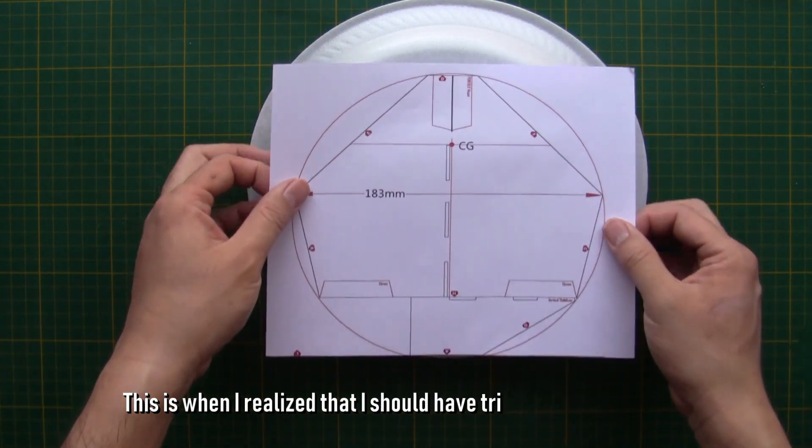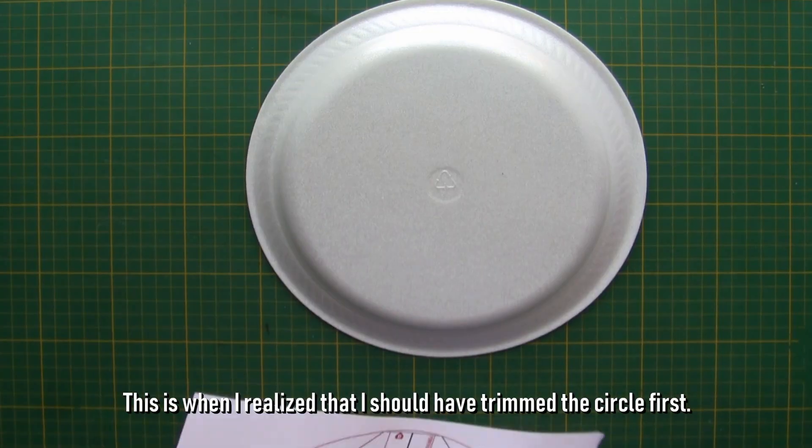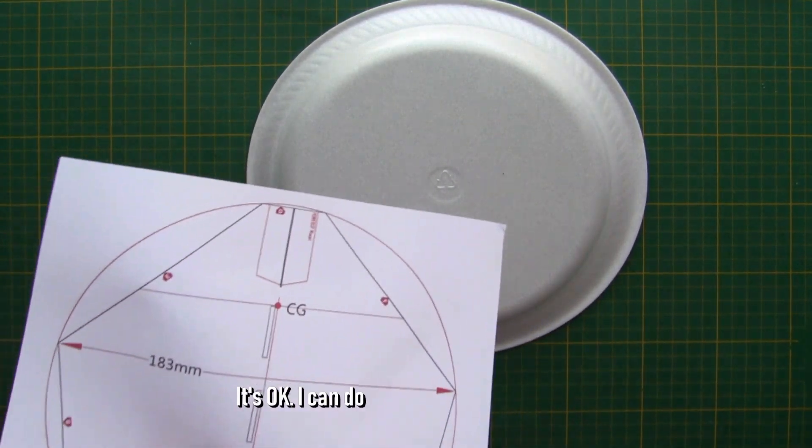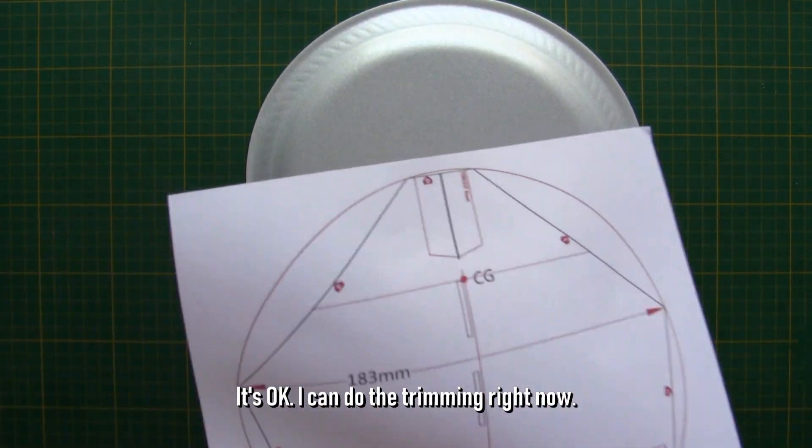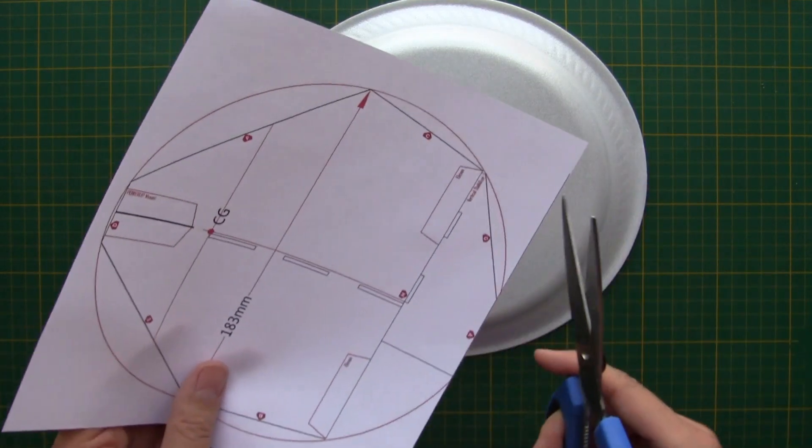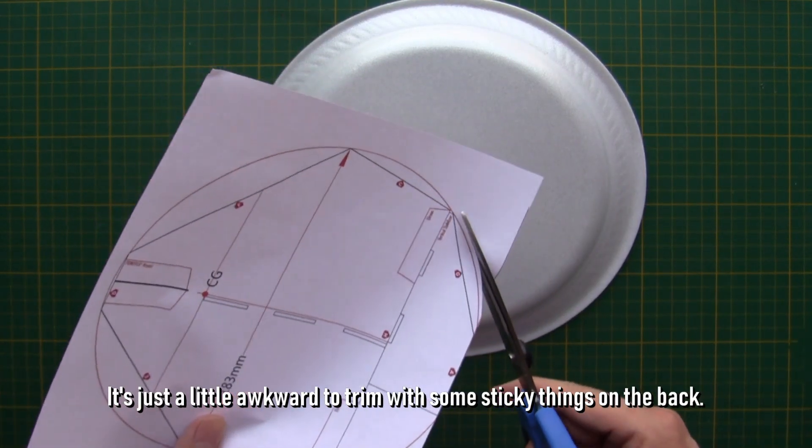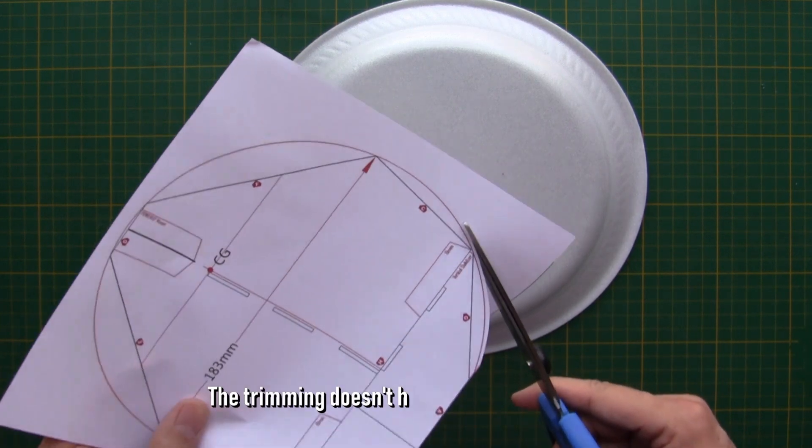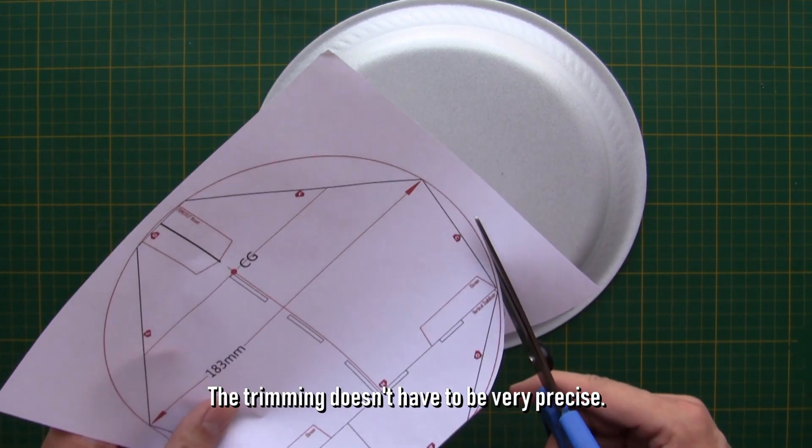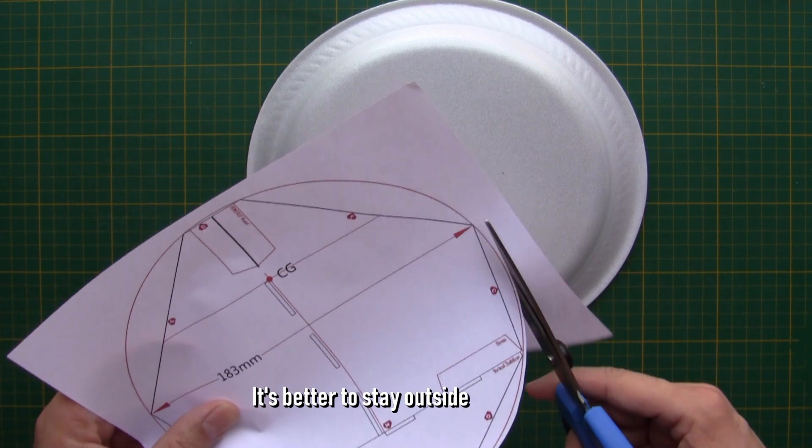This is when I realized that I should have trimmed the circle first. It's okay. I can do the trimming right now. It's just a little awkward to trim with some sticky things on the back. The trimming doesn't have to be very precise. It's better to stay outside the circle.